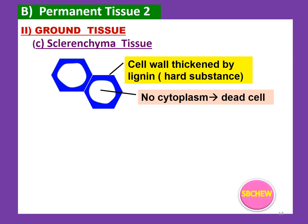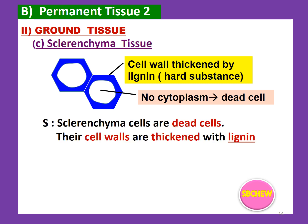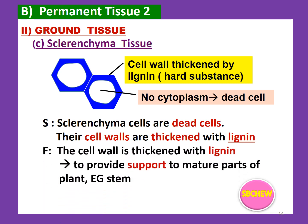The third type of ground tissue is the sclerenchyma tissue, which is made up of sclerenchyma cells. Sclerenchyma cells are dead cells and do not have any cytoplasm or nuclei — thus each cell has a hollow centre. Their cell walls are thickened with lignin so that they are able to provide support to the mature parts of the plant, such as the stem. In conclusion, there are three types of ground tissue — parenchyma tissue, collenchyma tissue, and sclerenchyma tissue — that provide support to the plant in different ways.